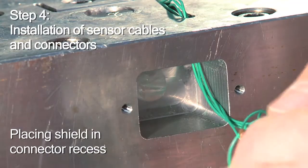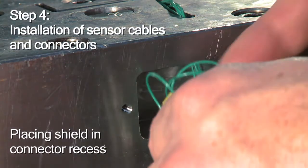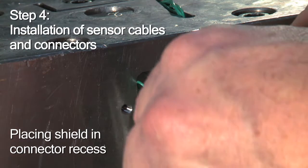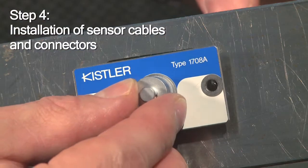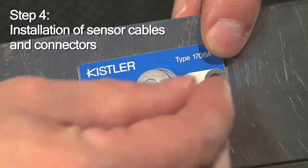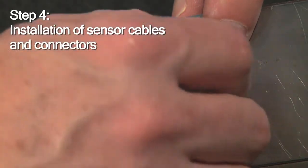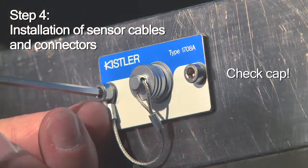All you have left to do is carefully arrange the cables. Place the connector in the recess and screw it on. Make sure the cap is installed too.